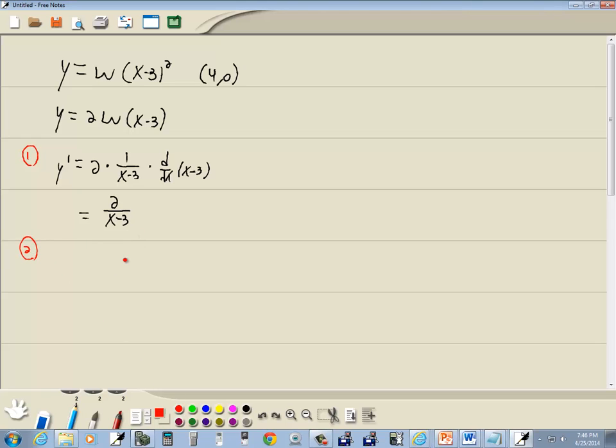Step 2. Plug in the x part of the point. This is our point, so that's x, that's y. And change our notation to m. So we're changing y prime to m. And we've got 2 over, and we just said that x is 4, so we'll put 4 in for the x. 4 minus 3. 4 minus 3 is 1, so we've got 2 over 1, or m equals 2.